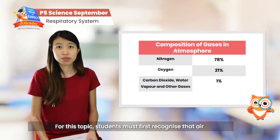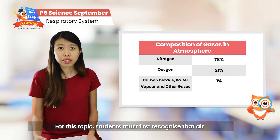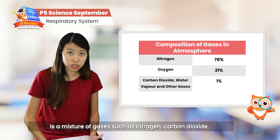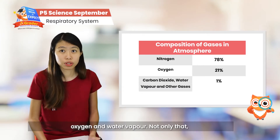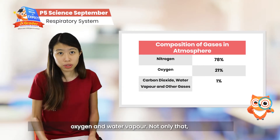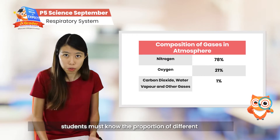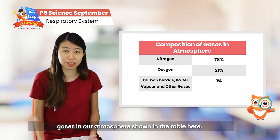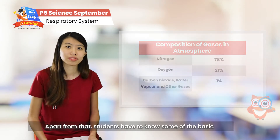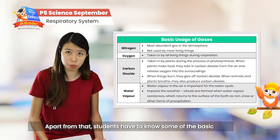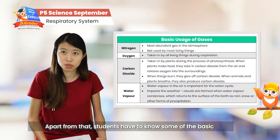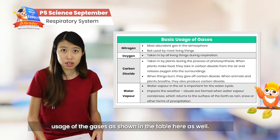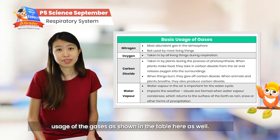For this topic, students must firstly recognise that air is a mixture of gases such as nitrogen, carbon dioxide, oxygen, and water vapour. Not only that, students also have to know the proportion of different gases in our atmosphere as shown in the table here. Other than knowing about the proportions, students also have to know some of the basic usage of gases as shown in this table here as well.